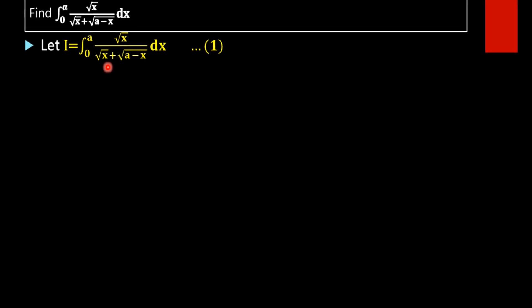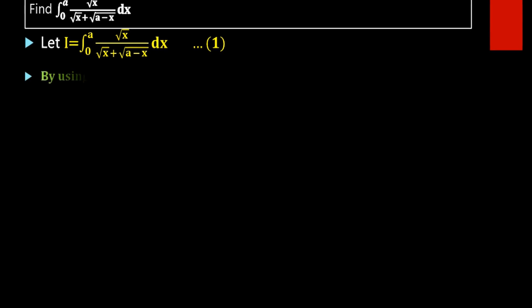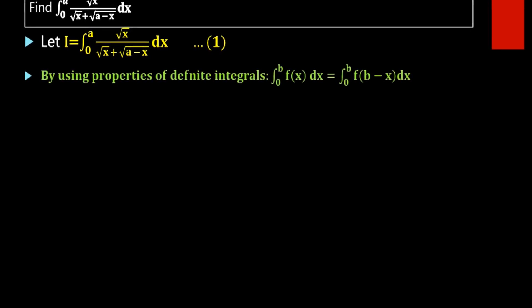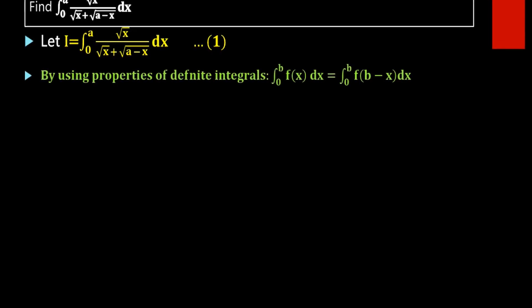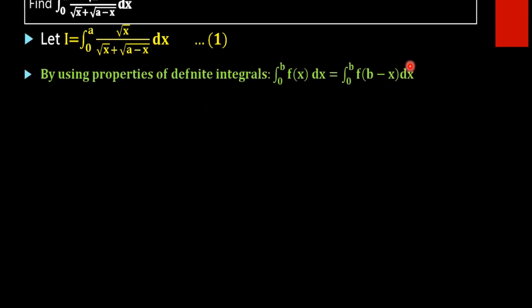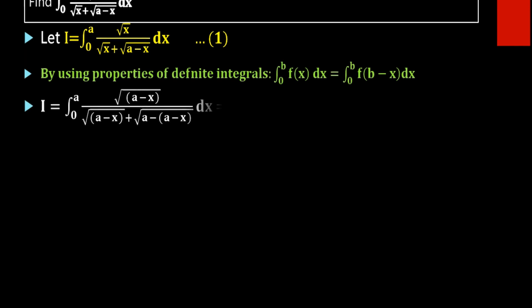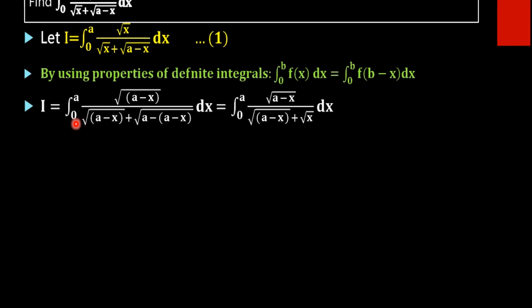Taking this as equation i, next we are going to use the property of definite integrals: integral 0 to b of f(x) dx equals integral 0 to b of f(b minus x) dx. So instead of x, we substitute (a minus x).